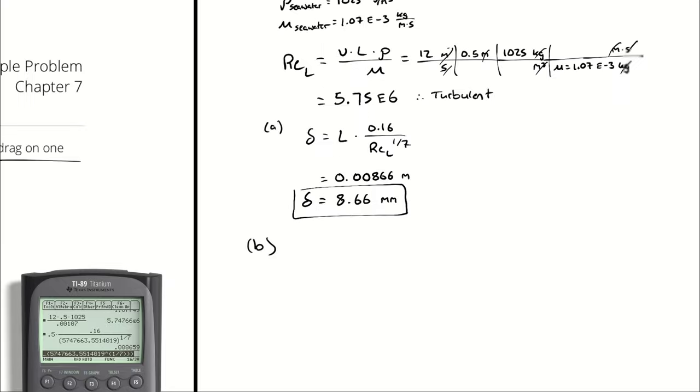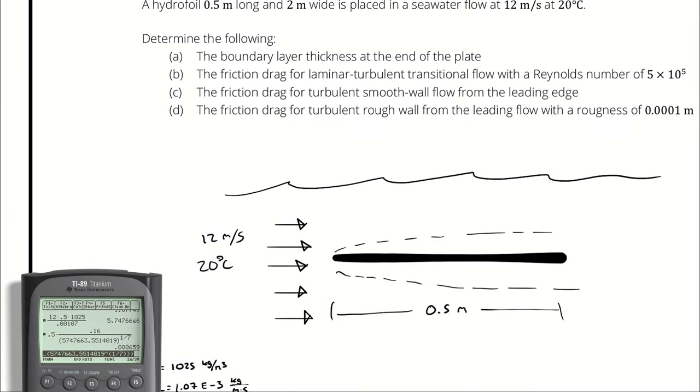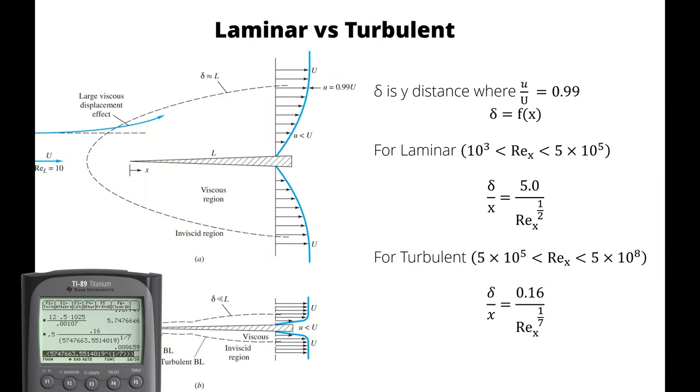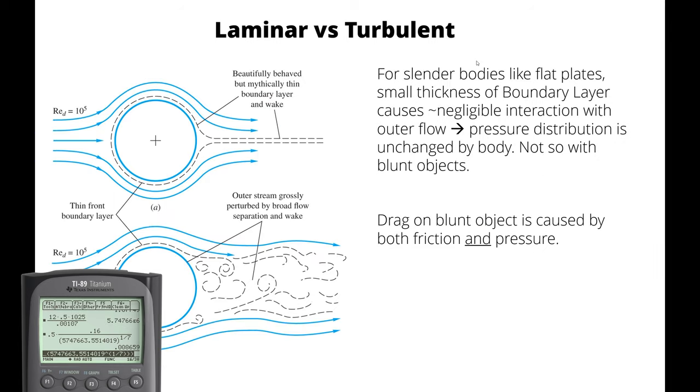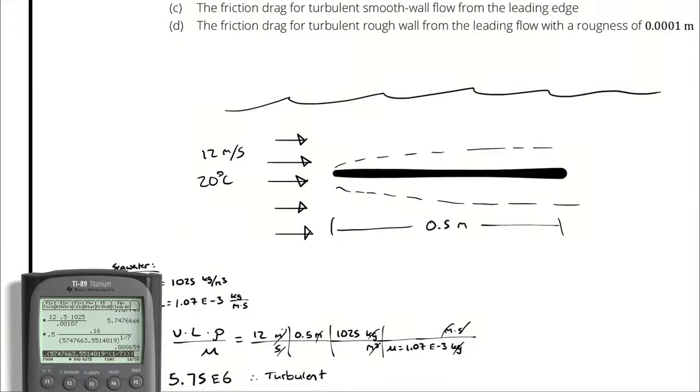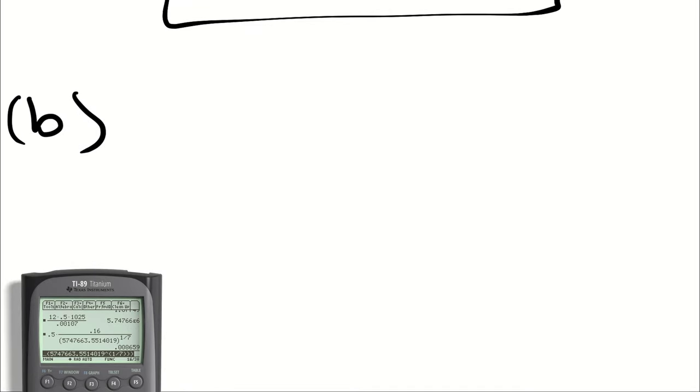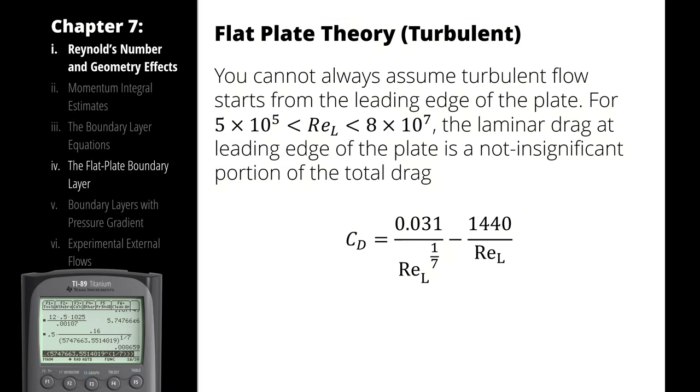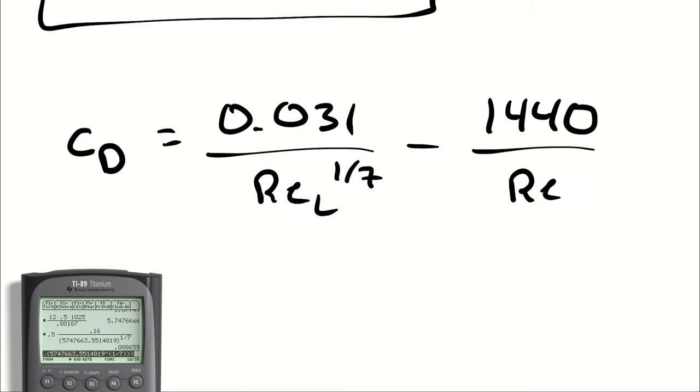Then for the coefficient of drag for laminar to turbulent transitional flow, I'm going to use this equation. So 0.031 divided by the Reynolds number to the 1/7th power minus 1440 divided by the Reynolds number. That is again 0.031 divided by the Reynolds number to the 1/7th power minus 1440 divided by the Reynolds number.